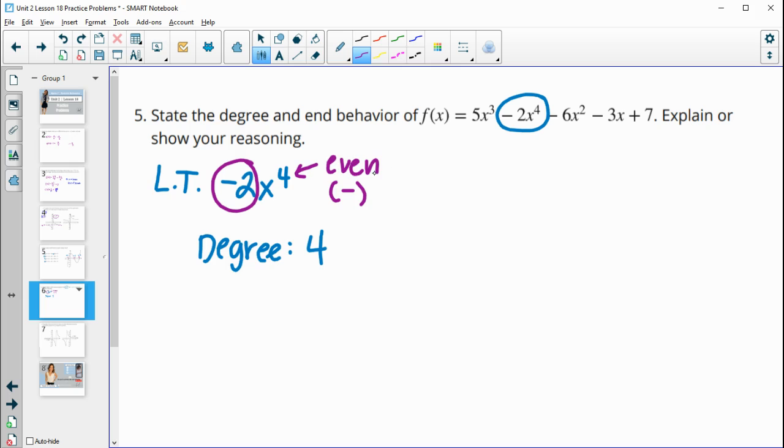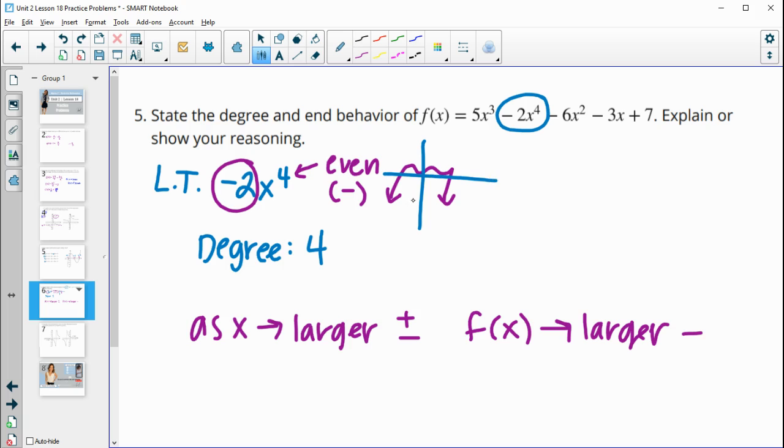So when you have an even function, the branches or the end behaviors, the arrows are going to point the same way. And when it's negative, those arrows are going to point down. So as x gets larger and larger in both directions, so in the positive and the negative direction, f(x) is going to get larger in the negative direction. So as our function goes to either side, because remember the x's, positive x's are the right side, negative x's are the left side, our graph is going negative or down. So on the right and the left, the graph is going down.